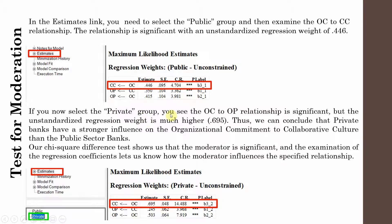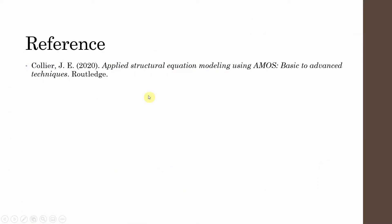In the private group, the OC to CC relationship is significant and the unstandardized regression weight is 0.695, compared to 0.446 in public sector banks. Thus we can conclude that private banks have a stronger influence of organizational commitment on collaborative culture than public sector banks. Our chi-square difference test shows the moderator is significant, and the examination of regression coefficients tells us how the moderator influences the specified relationship.